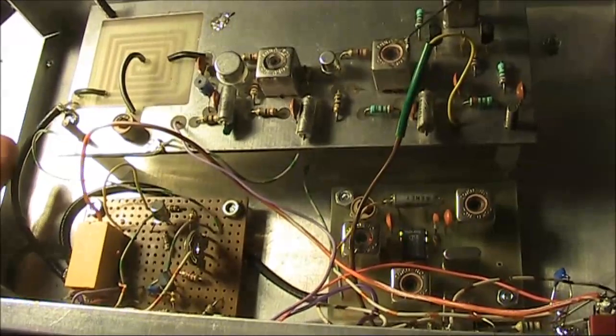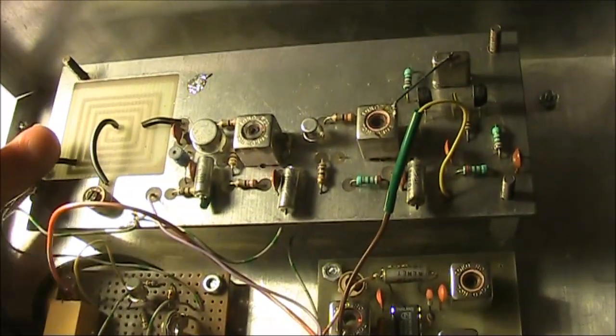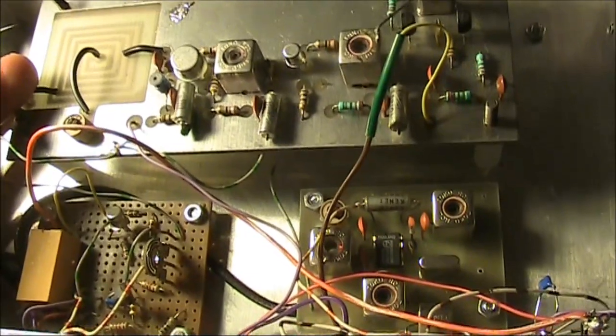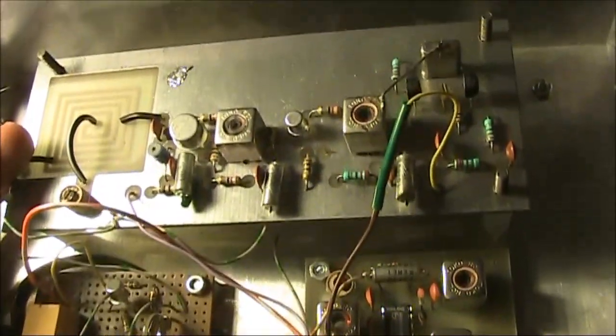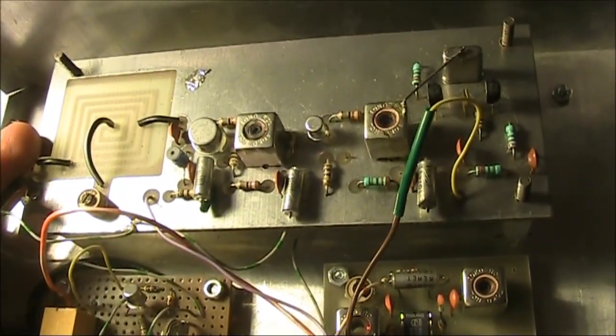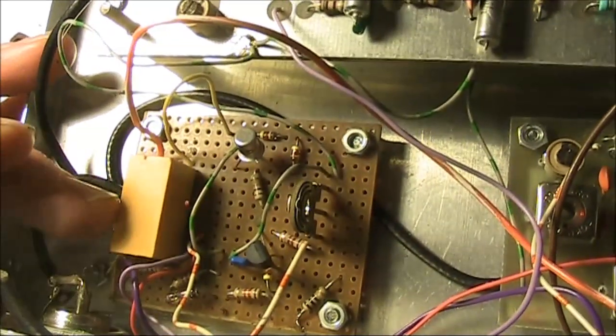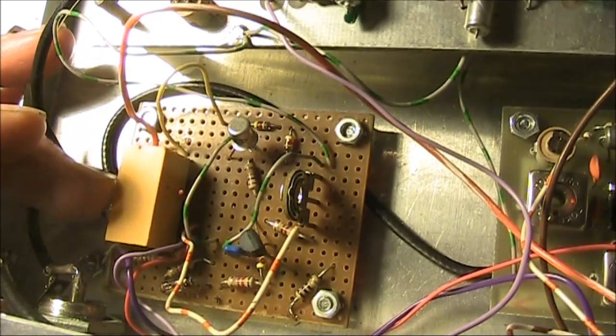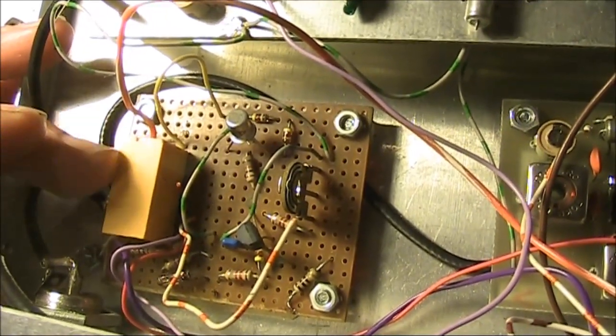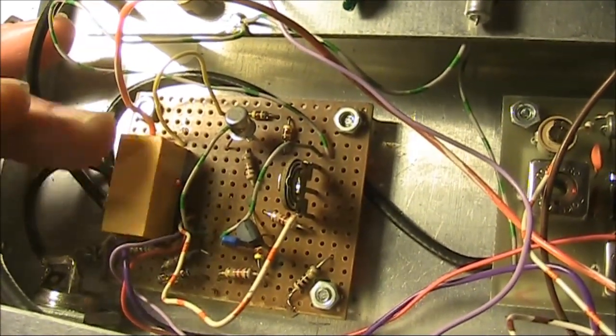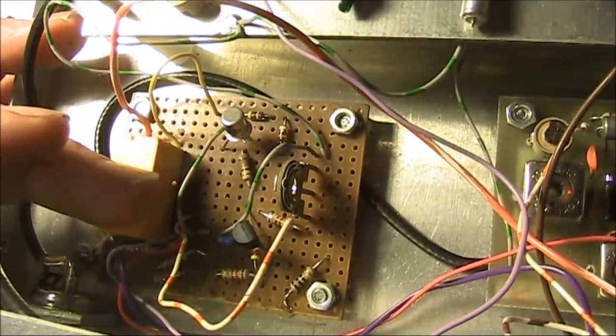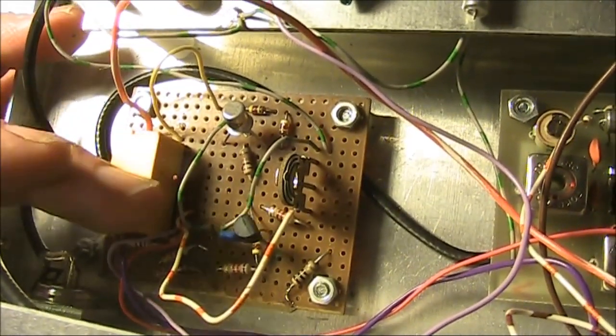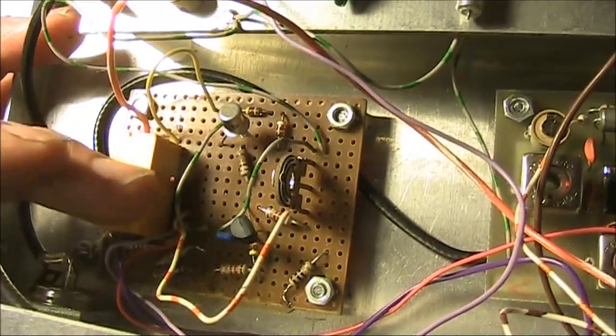Having a look inside, there are three boards. Two of them are printed circuit board. They may well be commercially available kits. And then here on a bit of matrix board, or Vero board, is a homebrew relay circuit. And a couple of transistors here, so probably the control circuitry.